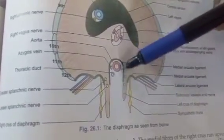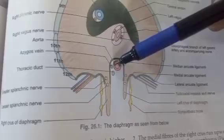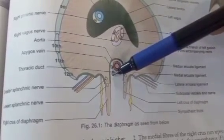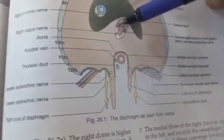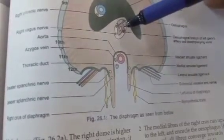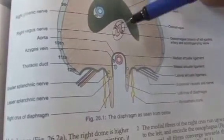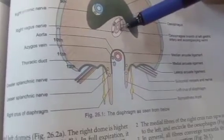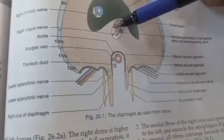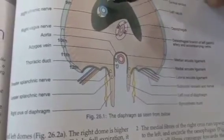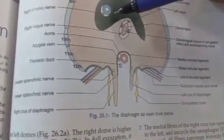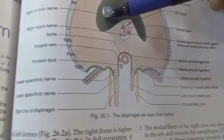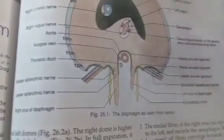The aortic opening transmits the aorta, azygos vein, and thoracic duct. The esophageal opening transmits the right and left vagus nerves as well as the esophageal branches of the left gastric artery. The vena caval opening transmits the inferior vena cava, the right phrenic nerve, and the lymphatics of the liver.